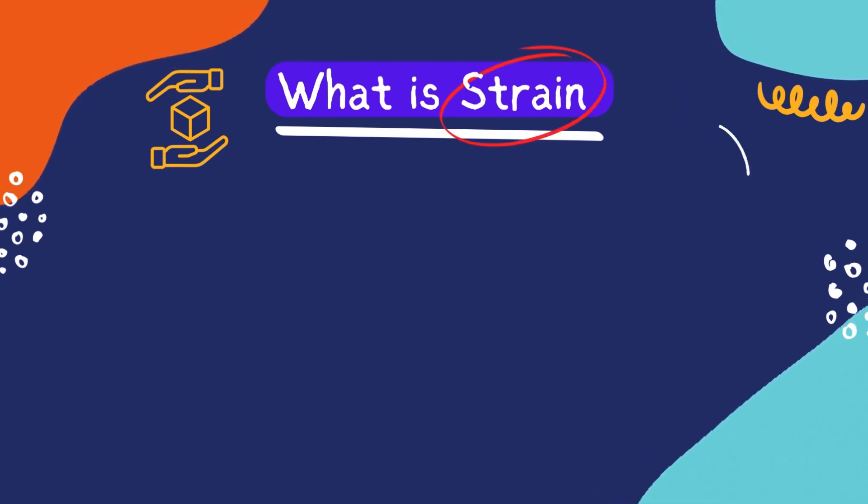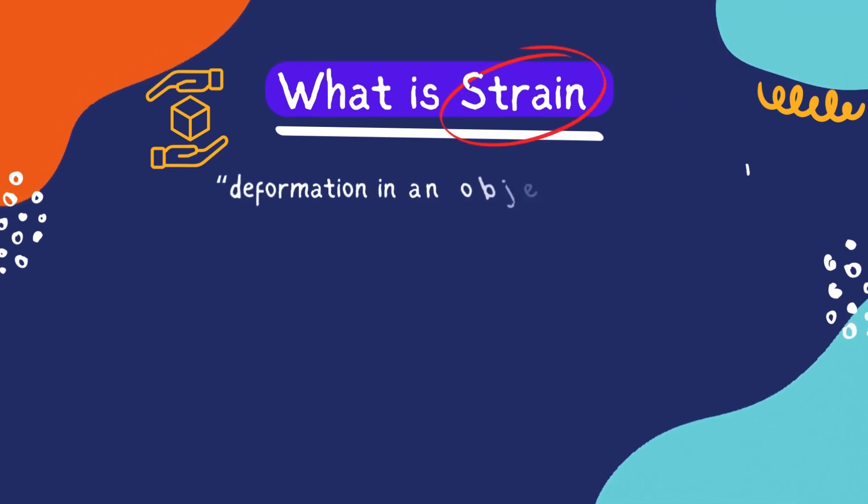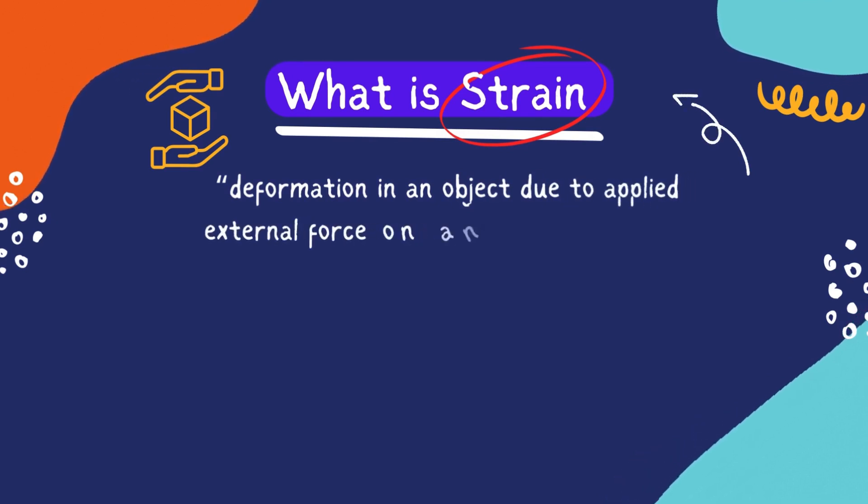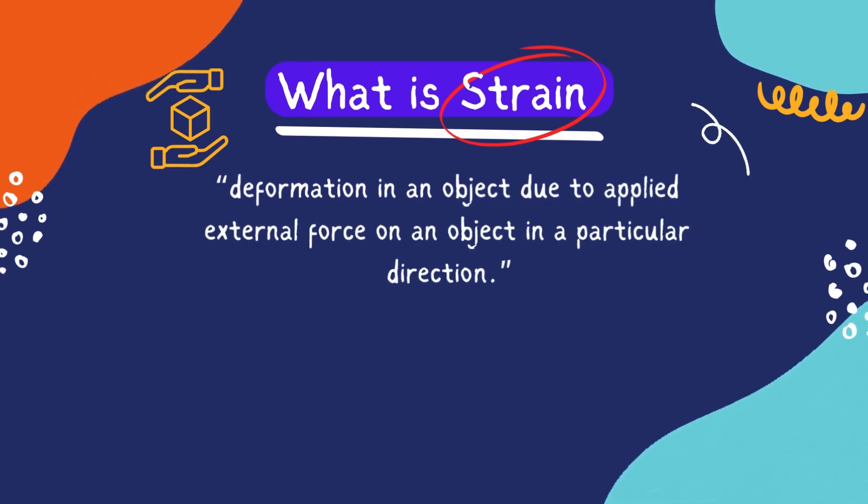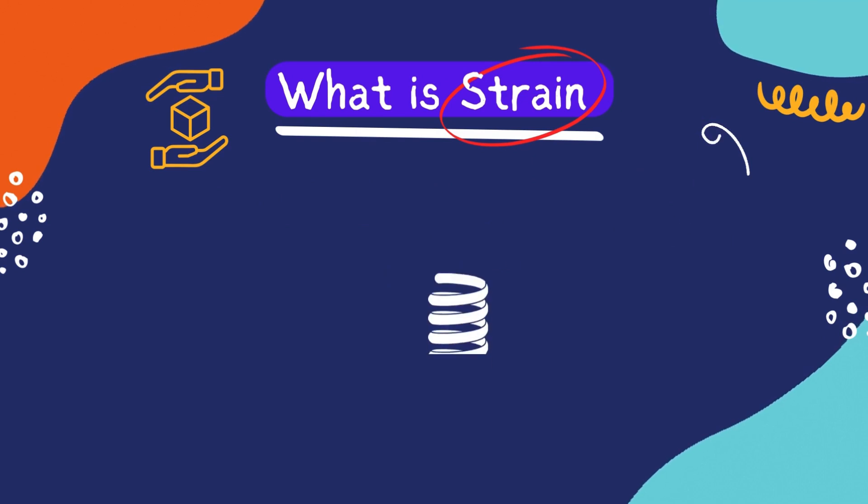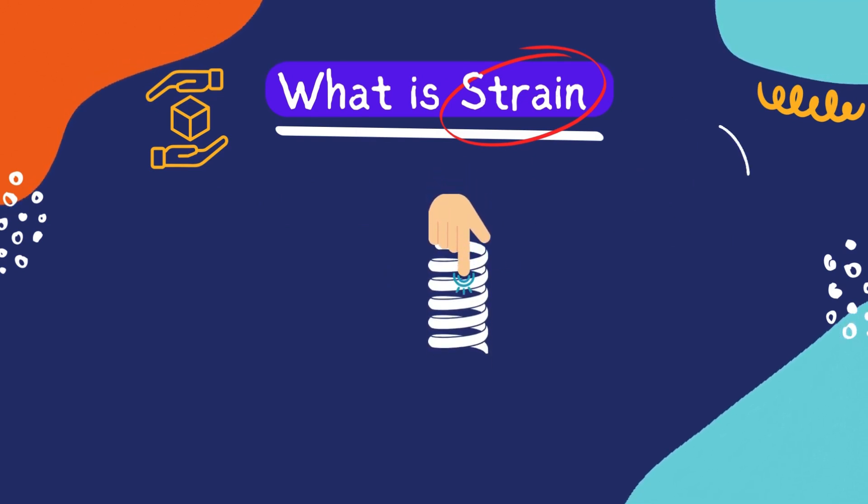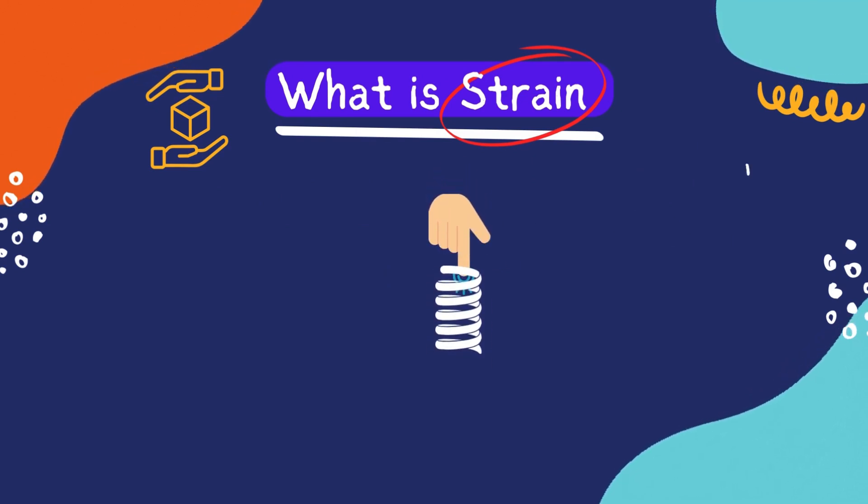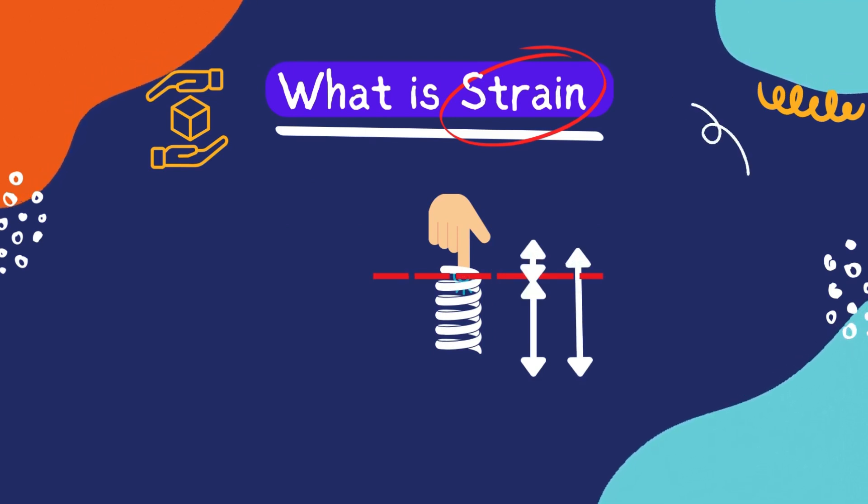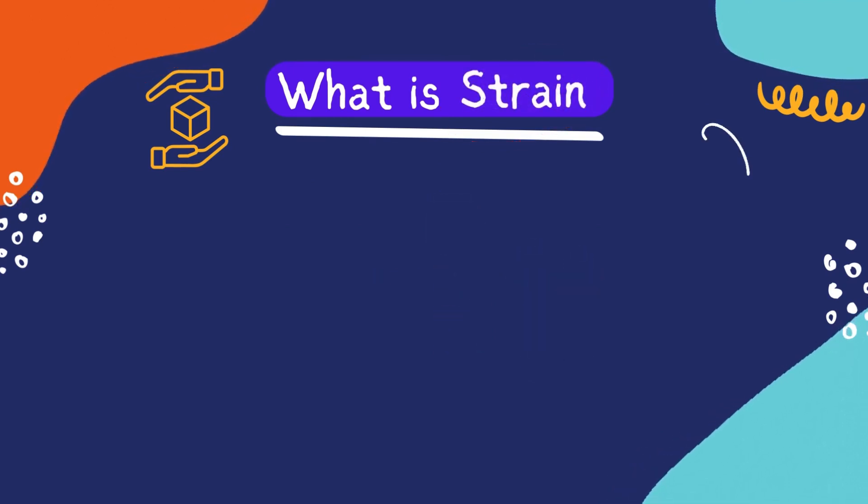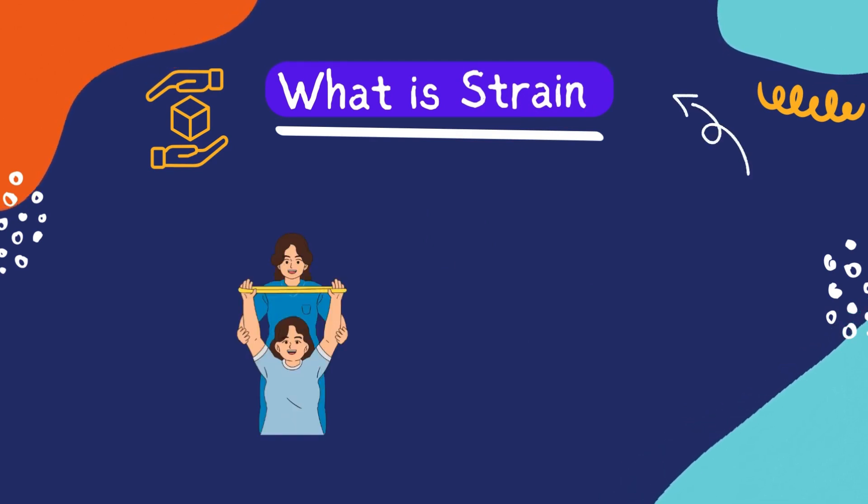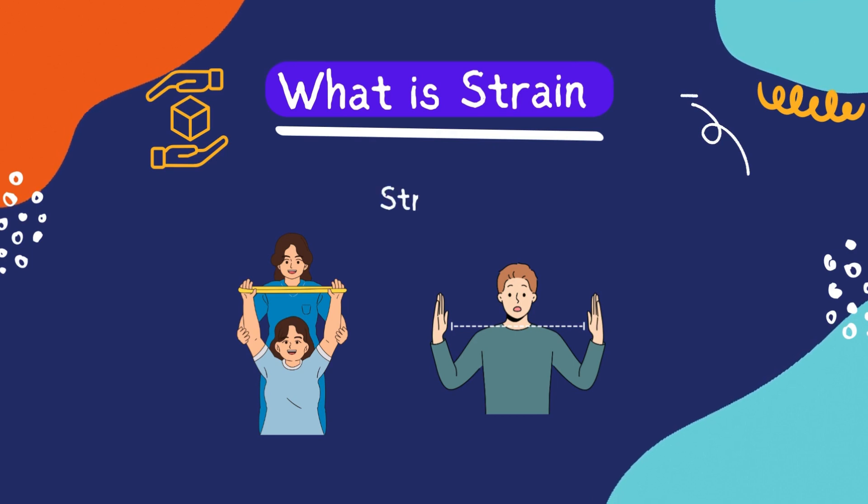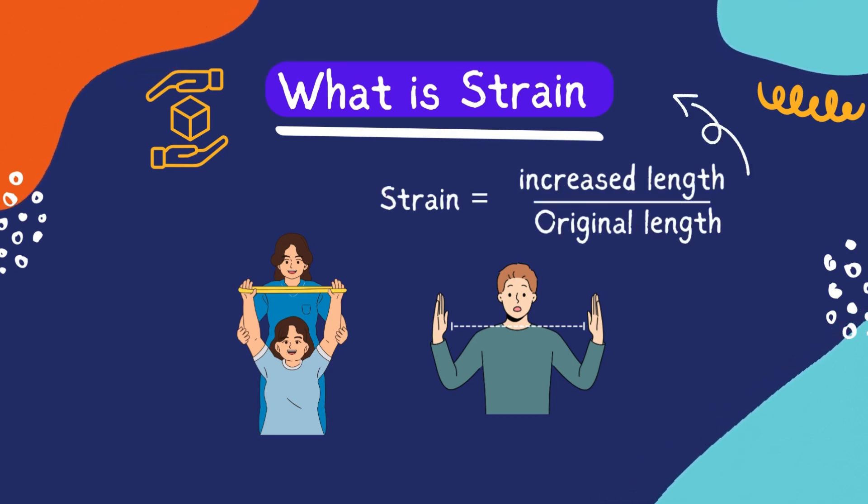So what is strain? Strain is known as deformation in an object due to applied external force in a particular direction. For example, if you push down this spring, it will have a reduced length, so the difference of this length in comparison to the original length will be called strain in the spring. Similarly, if you pull a rubber band, it will have increased length, so this increased length divided by the original length will be the strain in the rubber.